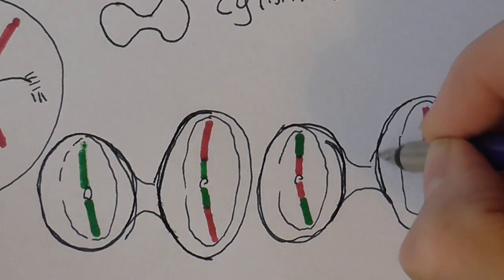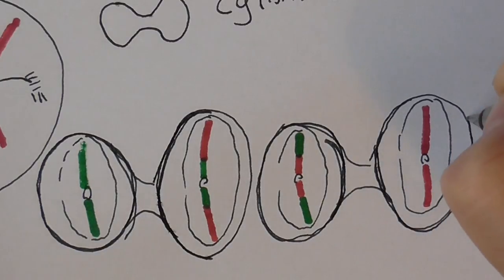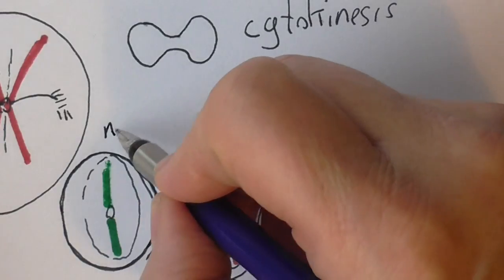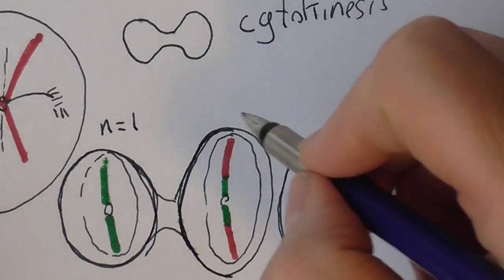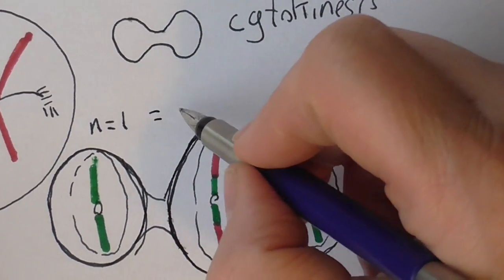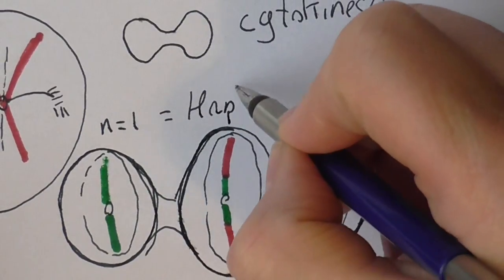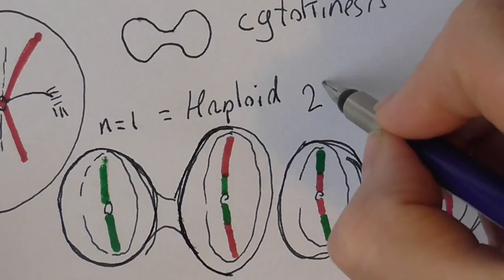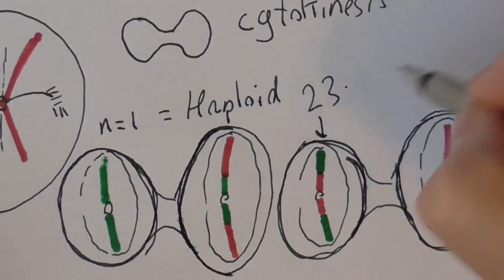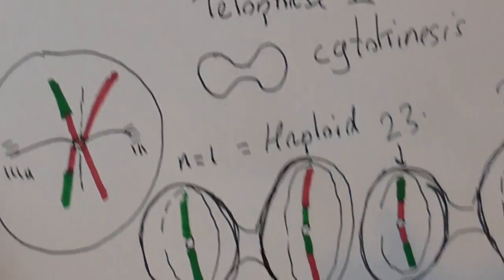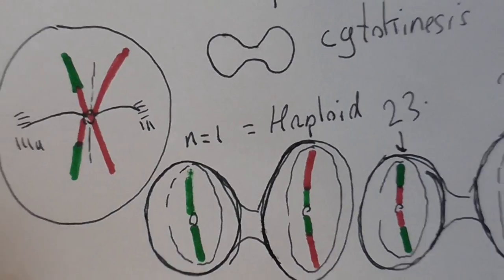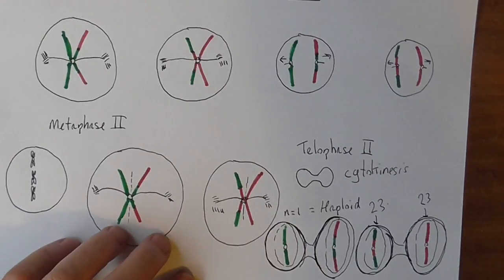The key thing we need to notice is that there is genetic recombination and the number in each cell is N equals 1, which is haploid. 23 chromosomes in there, 23 chromosomes in there, in here, and in here. So that's the second stage of meiosis. Prophase 2, metaphase 2.